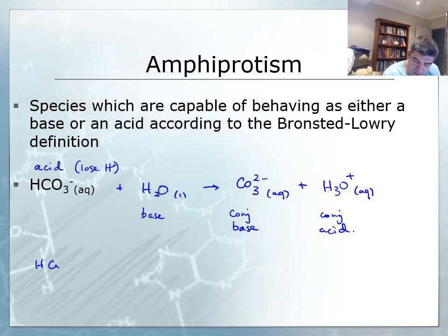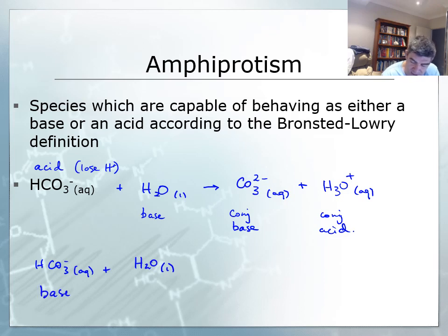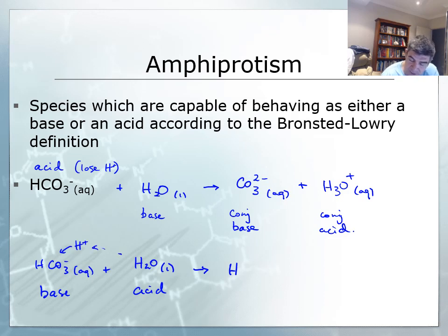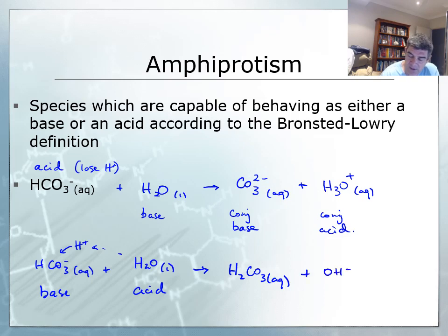Now let's take exactly the same two reactants but switch them around so that the bicarbonate ion is acting as a base, which means the water is acting as an acid. If it's acting as a base, it will accept a proton from the water molecule, giving us H₂CO₃ — carbonic acid, which is a weak acid involved in the equilibrium for soft drinks. What's left behind is the hydroxide ion. H₂CO₃ is the conjugate acid and the hydroxide ion is the conjugate base.